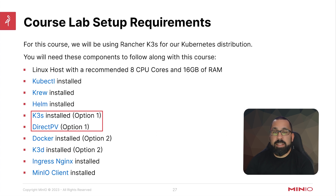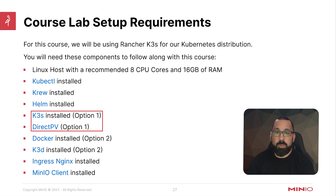K3S and DirectPV is option one. If you want to deploy a single node Kubernetes cluster with K3S directly on top of Linux and then leverage something like DirectPV for your persistent volumes, we'll show you how to do that.